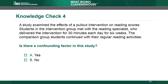Knowledge Check 4. A study examined the effects of a pullout intervention on reading scores. Students in the intervention group met with the reading specialist who delivered the intervention for 30 minutes each day for six weeks. The comparison group students continued with their regular reading activities. Is there a confounding factor? The correct answer is A, yes — there is a confounding factor. Only one group met with the reading specialist, so any differences between outcomes may be due to the intervention, the reading specialist, or both.